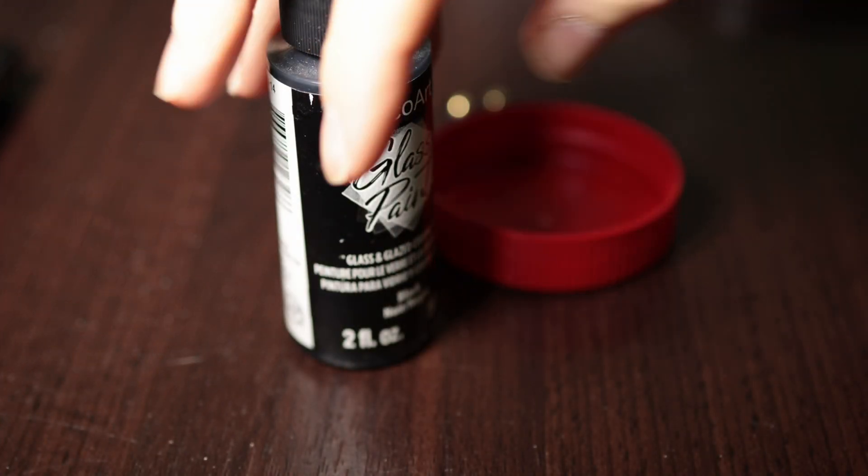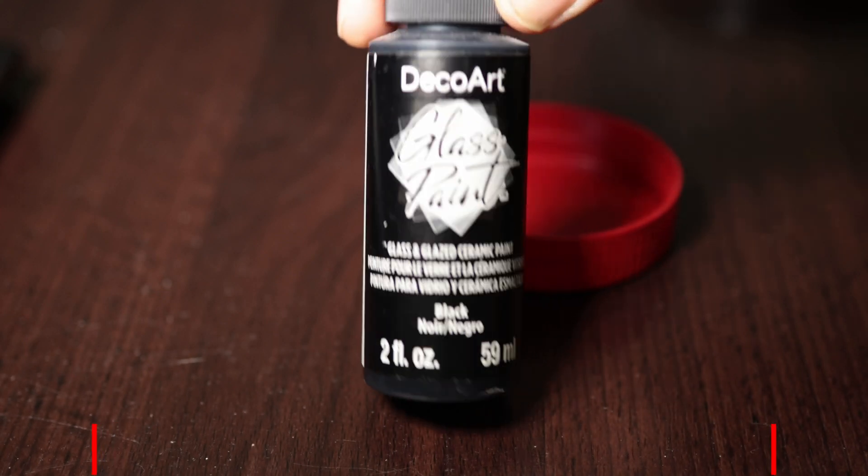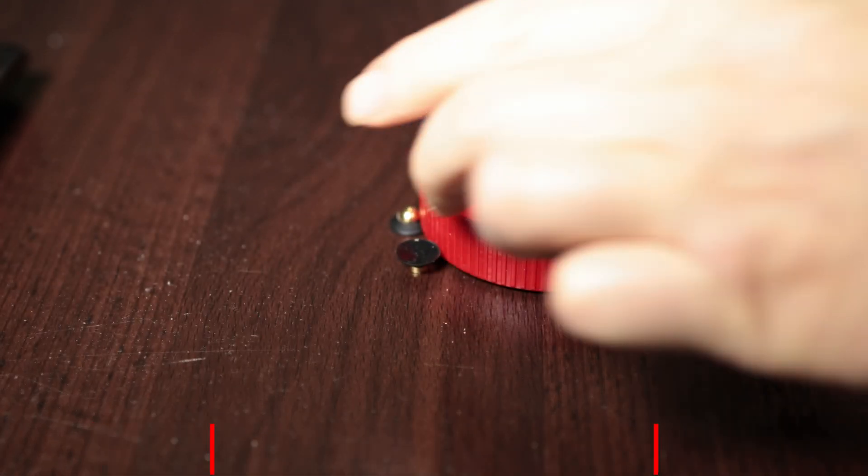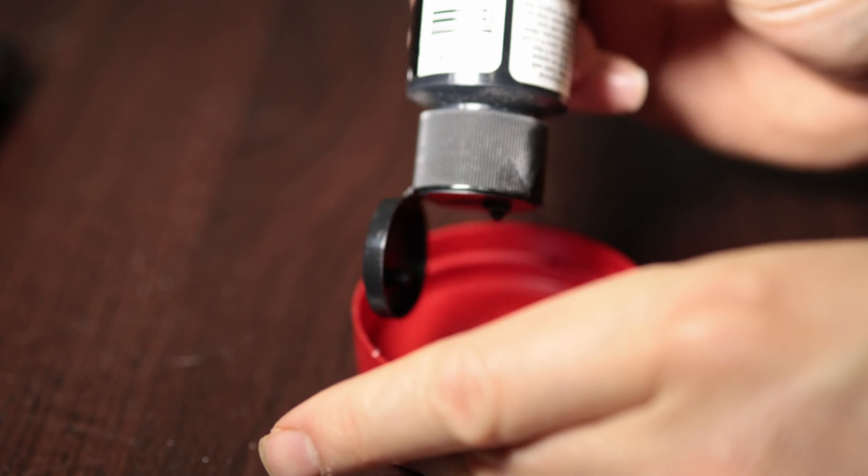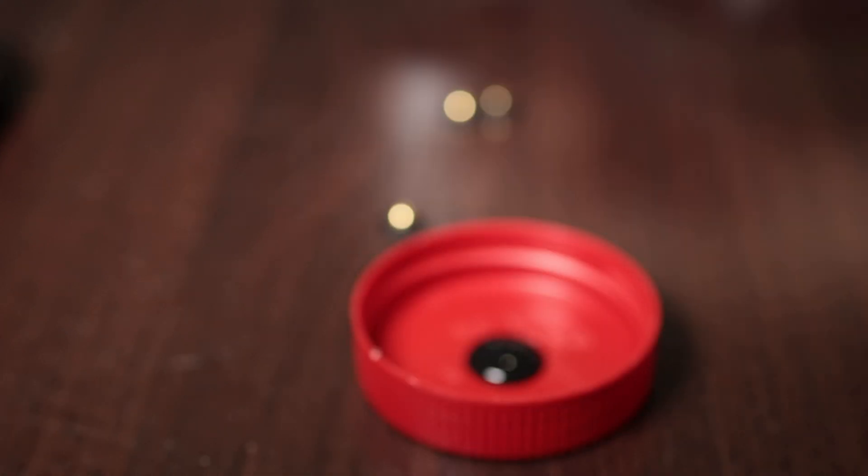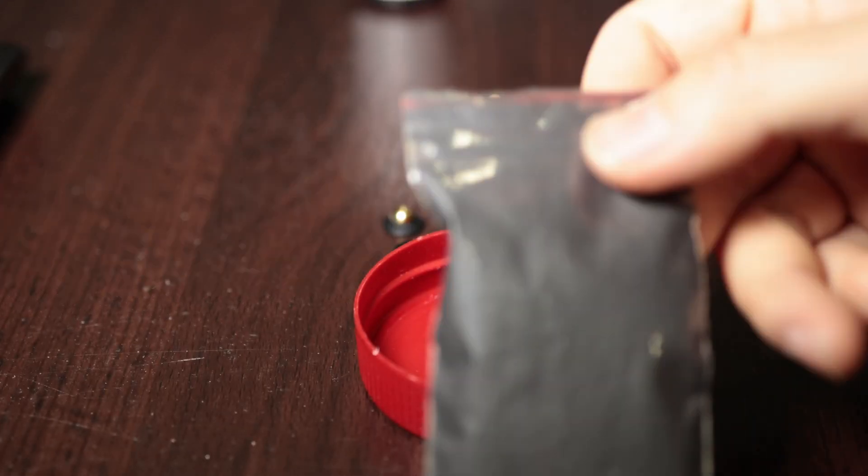This is acrylic paint. We don't need a lot. The solution is four parts acrylic to one part graphite powder. The graphite powder is the secret sauce for conducting electricity by the way.